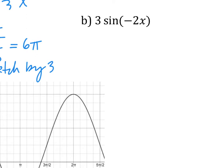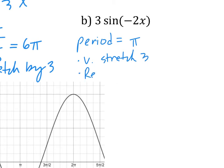For B, what is the period? It's 2π over the absolute value of B. The answer is π — not negative π, because we're talking about a length. For the transformations: vertical stretch by 3, reflect over the y-axis, and horizontal compress by 1/2.